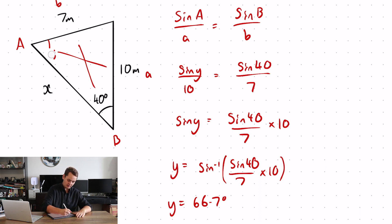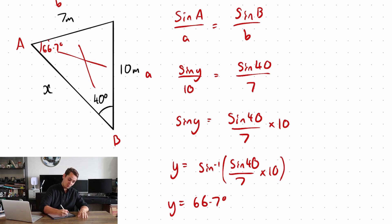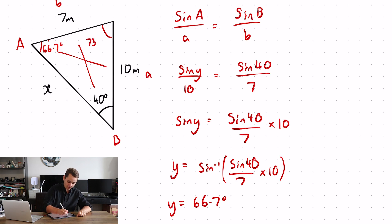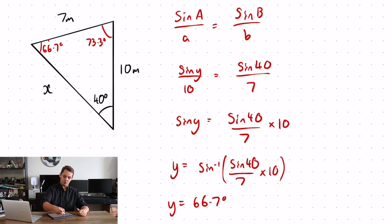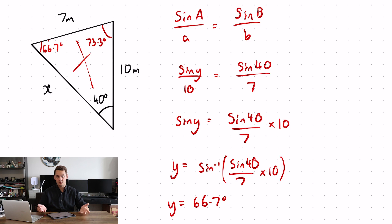So now I know my angle Y is 66.7 degrees. Using this information I can then work out my third angle by using angles in a triangle add to 180, which gives me the angle there as 73.3 degrees. Now I have the option to either use the sine rule or the cosine rule to work out my side length — either I can use the two sides and the angle between with the cosine rule, or I can use angle opposite side mixed with angle opposite side using the sine rule.